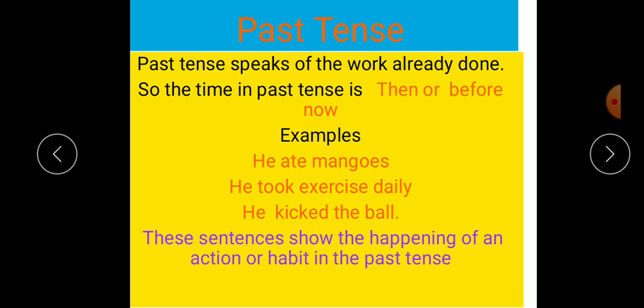My dear kids, past tense speaks of the work already done. Yarni ki hum us kaam ke baare mein baat kar rahe hai, joh hua hai, joh humni kiya hai, wo kaam joh humni kiya hai, usi ko hum past tense kahi ki. Past tense is used to show the actions which were repeated. We can say the time in past tense is then or before now.